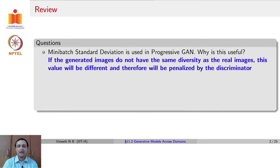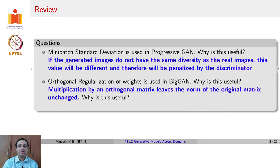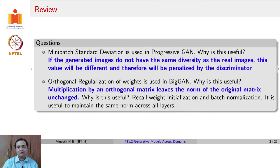The generator would learn to generate diverse images, and that is the main idea of including this in Progressive GAN. The second question was: why is orthogonal regularization of weights used in BigGAN? The answer comes from linear algebra. Multiplication of a matrix by an orthogonal matrix leaves the norm of the original matrix unchanged. It is useful and important to maintain the same norm across all layers, and orthogonal regularization is a method that tries to achieve this during training.